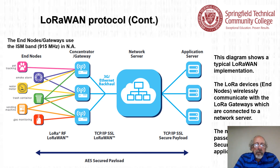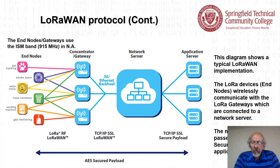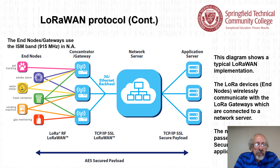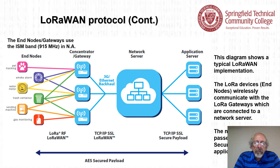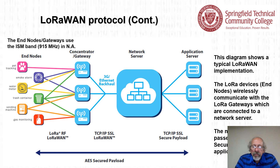This slide shows the LoRaWAN protocol diagram illustrating a typical implementation. LoRaWAN devices and nodes wirelessly communicate with LoRaWAN gateways, which are connected to a network server. The network server passes a TCP/IP secure payload to the application servers. On the far left are end nodes — things like pet tracking, smoke alarms, water meters, trash containers, vending machines, and gas monitoring — connected to a concentrator or gateway, which are backhauled via 3G or Ethernet. There's a network server, and the information is passed on to application servers with advanced encryption securing the payload from end nodes to application server.